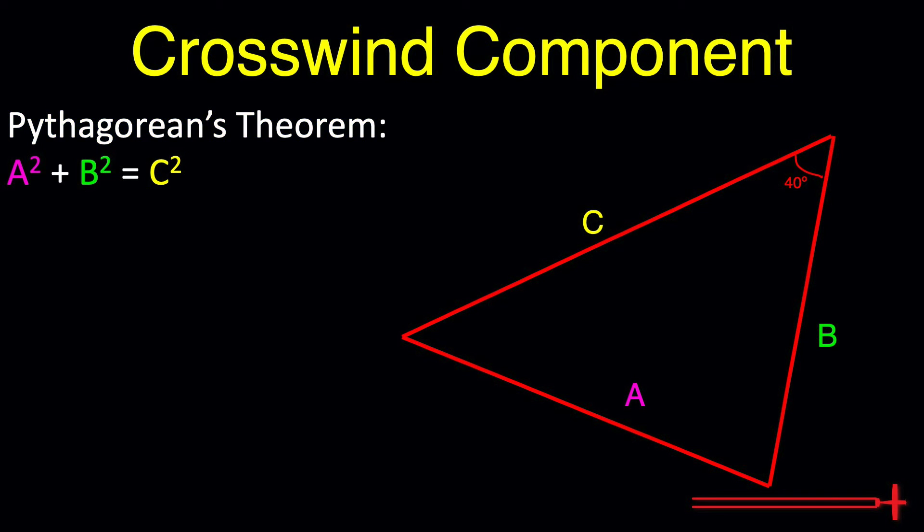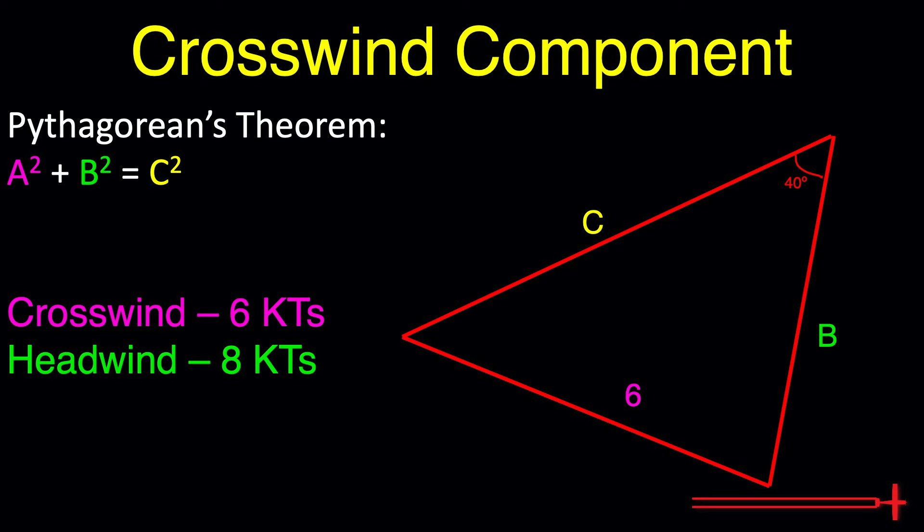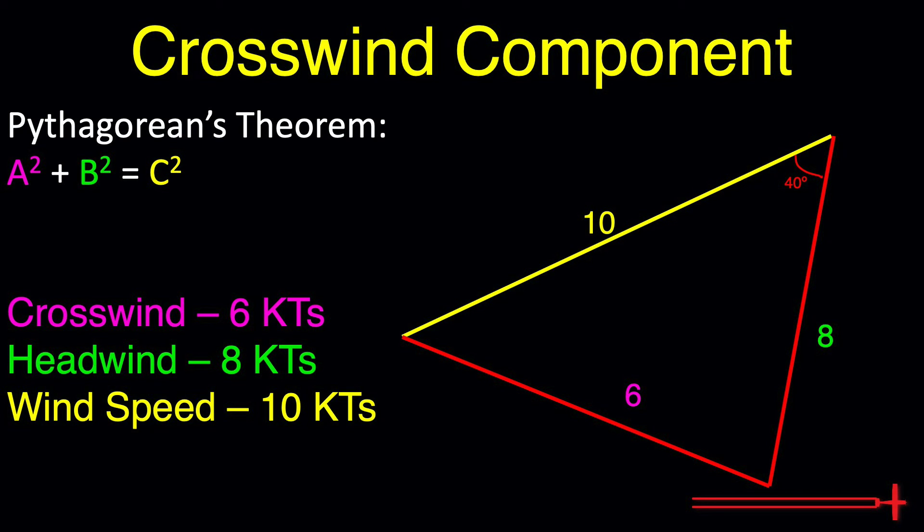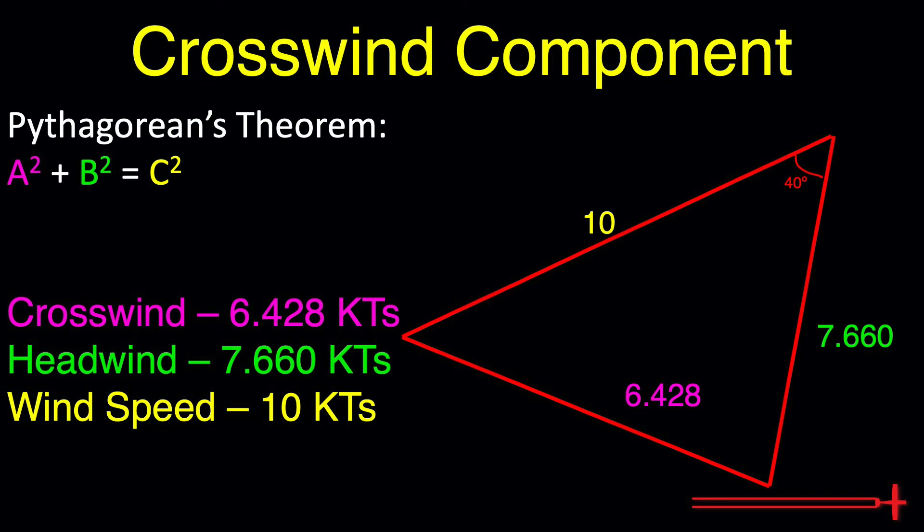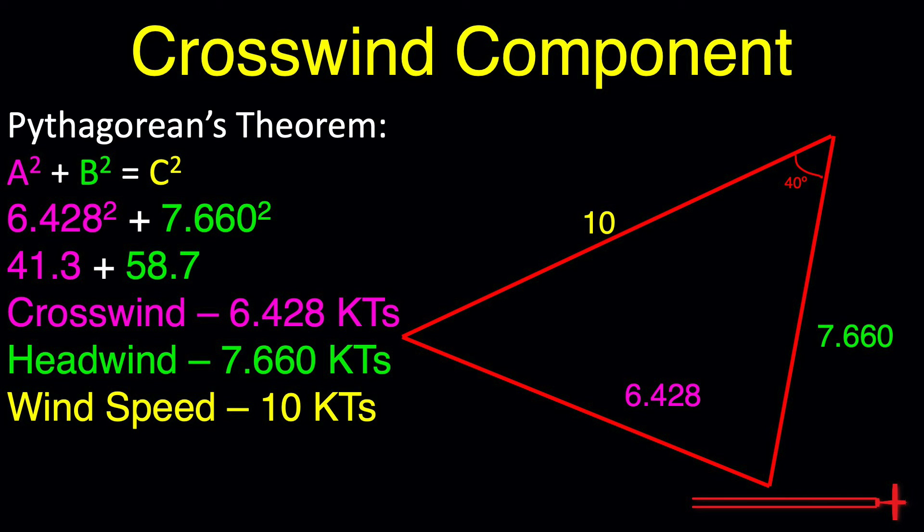Remember Pythagorean's theorem? A squared plus B squared equals C squared? We can use it along with our triangle to demonstrate the magnitude and direction of forces. Those forces being our previously found crosswind of 6 knots, which we can plug into our A value, a headwind of 8 knots for our B spot, and our 10 knot winds reported in Savannah's METAR, which will go into our C value. Let's go ahead and extend these values back out to the third decimal point, which will provide us with a more accurate answer at the end of all of this. If we follow along with Pythagorean's theorem and take A squared, or 41.3, and add that to B squared, or 58.7, we see that we're left with C squared, or 100. It checks out.